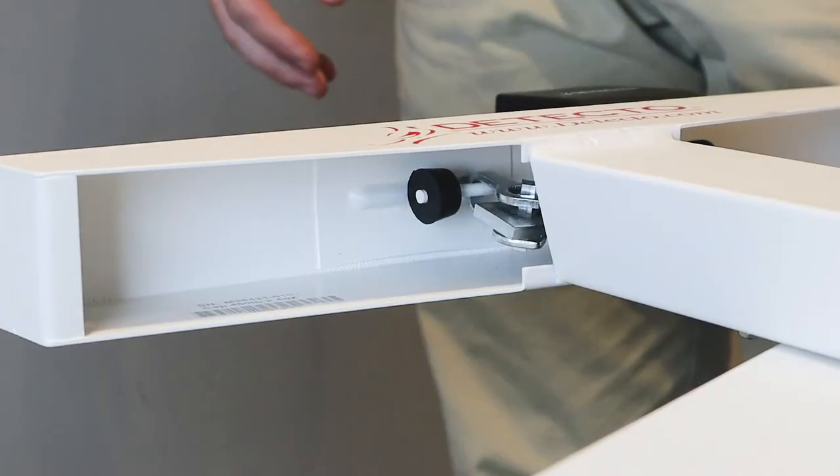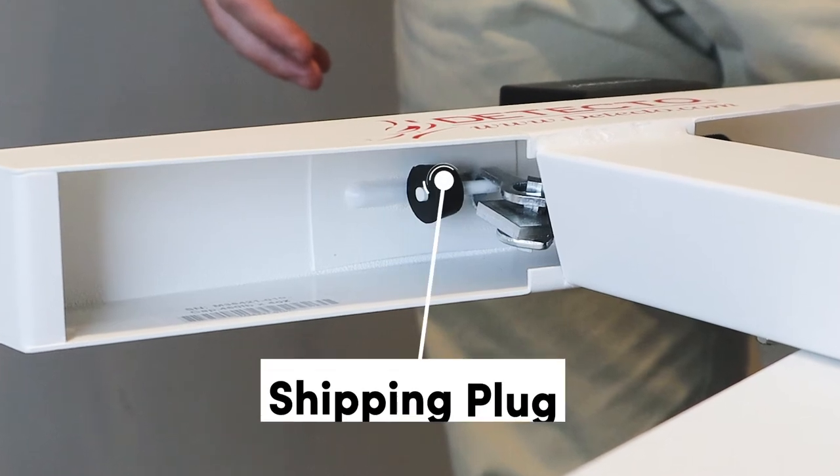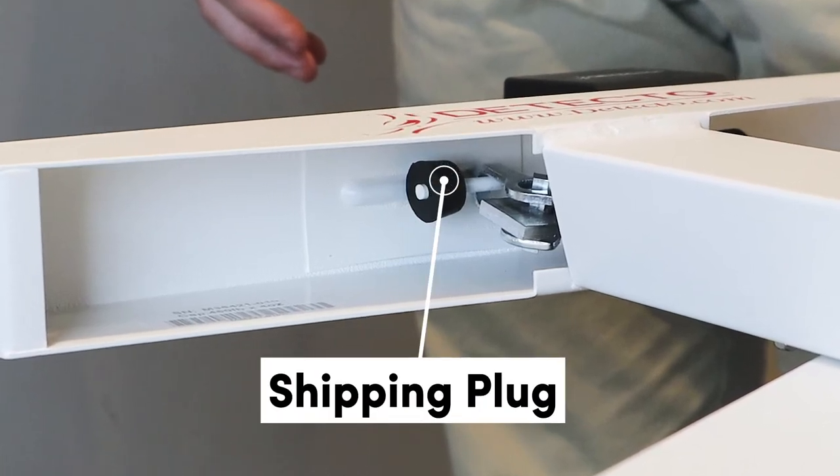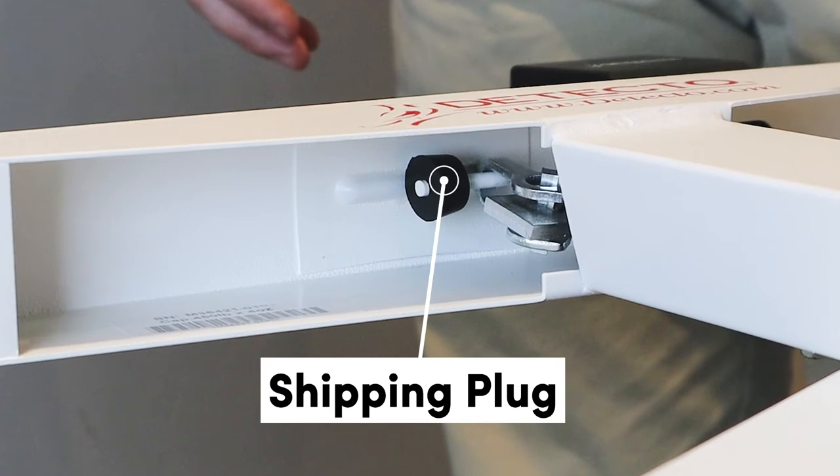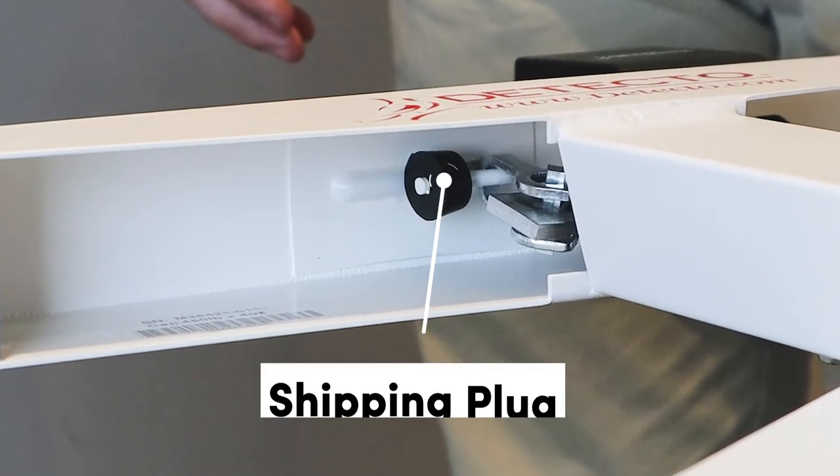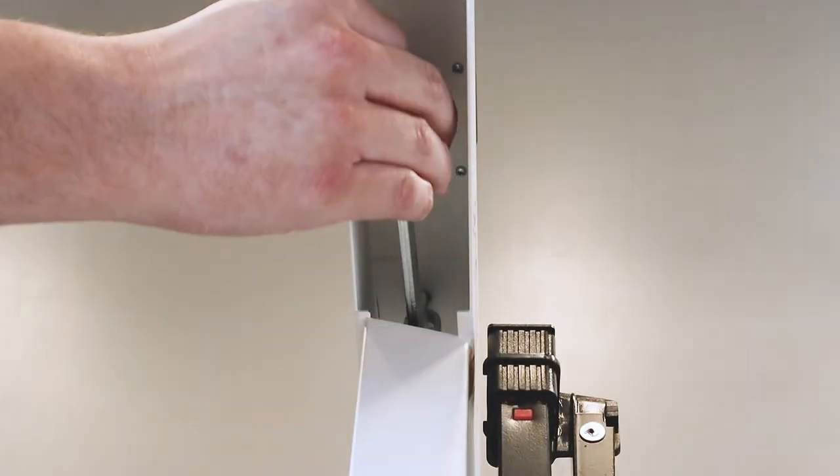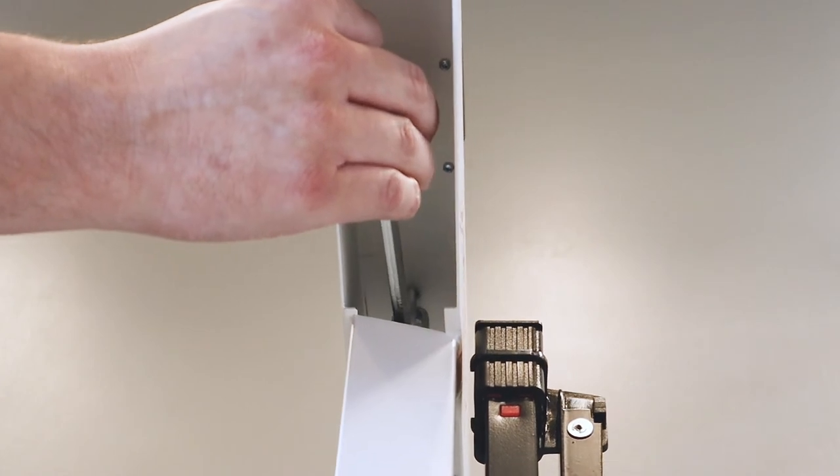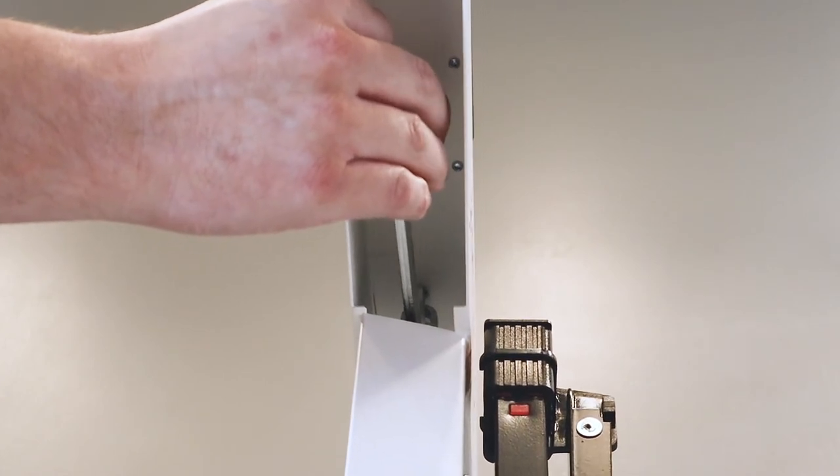The next step is to remove the shipping plug that is installed to ensure that the shelf lever linkage assembly in the way beam headpiece stays aligned during shipment. Note that even with the plug installed, the linkage may still come out of alignment during shipment and must be checked.